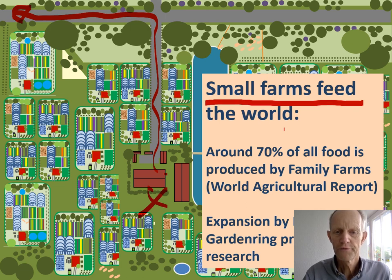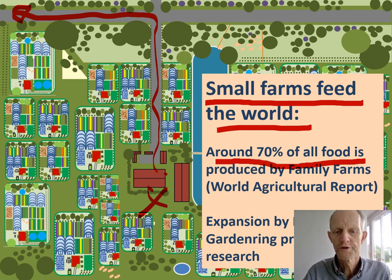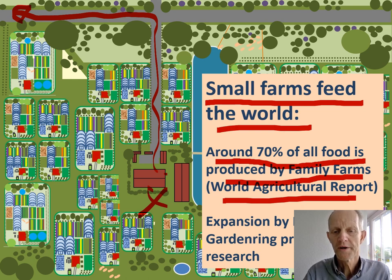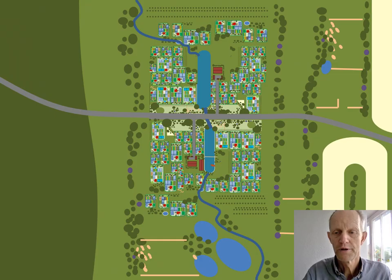Small farms feed the world. Around 70% of all food is produced by family farms, according to the World Agricultural Report. Expansion of family farms can be done through such new towns and garden ring projects, and research can help in this.